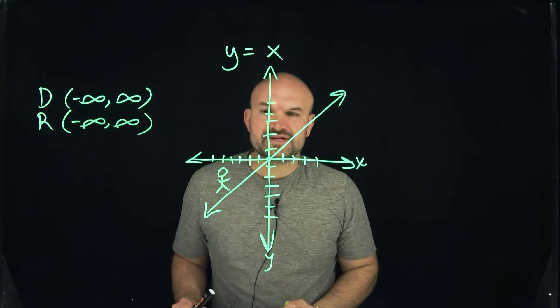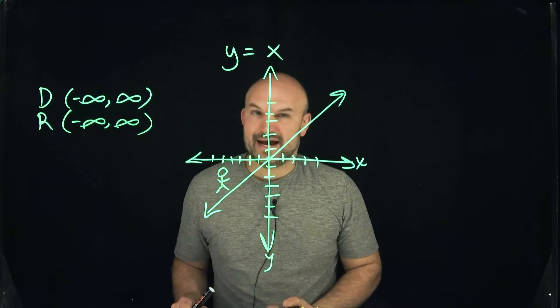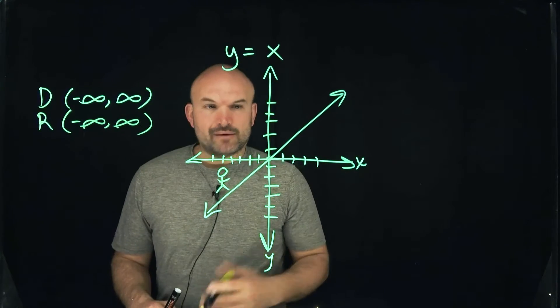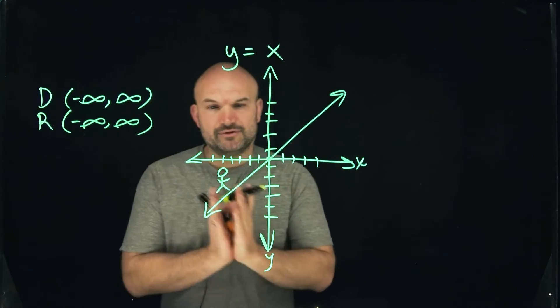The next thing we like to look at is: is the graph increasing, decreasing, or is it constant, and on what intervals? We're going to read it just like a book in the American language—we're going to read from left to right.